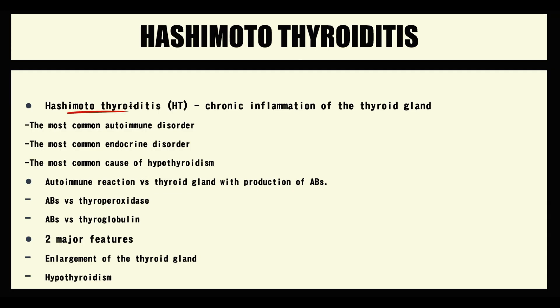Hashimoto thyroiditis is a chronic inflammation of the thyroid gland. It's the most common autoimmune disorder, the most common endocrine disorder, and the most common cause of hypothyroidism.